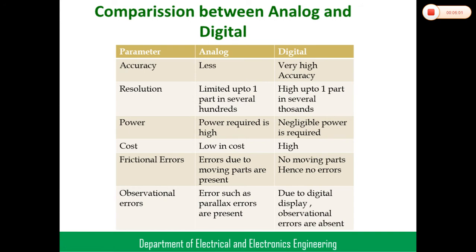Resolution in analog meters is limited to one part in several hundreds, whereas in digital meters it is one part in several millions — much higher resolution. Power consumed by analog meters is high, but in digital meters it is very low, almost negligible. Regarding cost, analog meters are cheaper, but currently digital meters have also become very low cost. Frictional errors occur in analog meters due to moving parts, but digital meters have no moving parts, so no frictional errors.